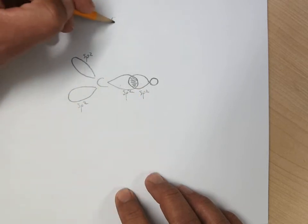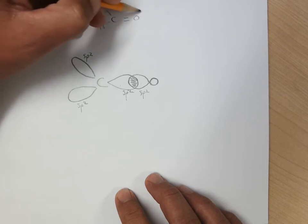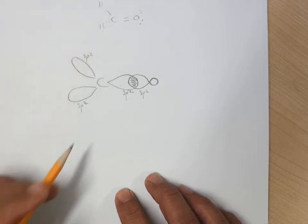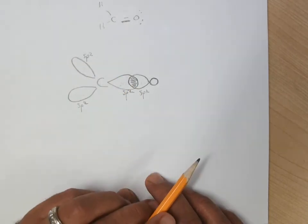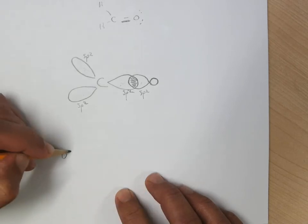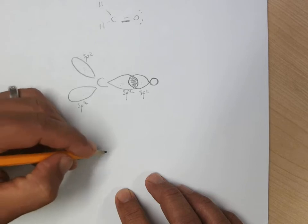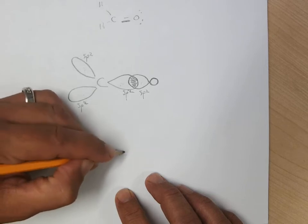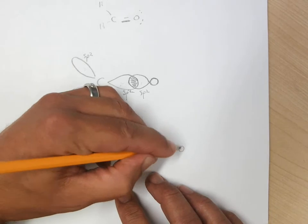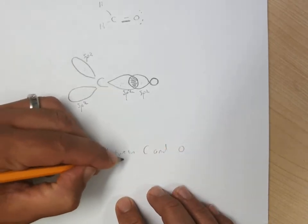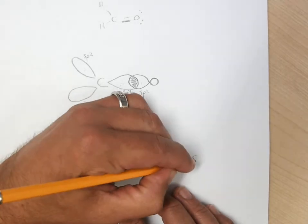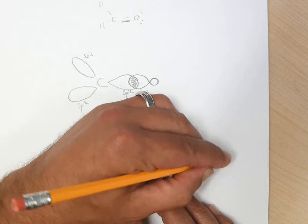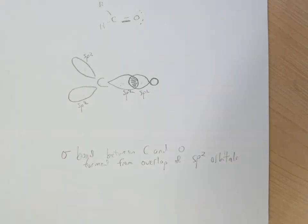So when we look at the Lewis dot structure and we see that carbon is bonded to the oxygen, we can see that this very first bond is the sigma bond between the SP2 orbitals. So that's why I might say we have a sigma bond between carbon and oxygen formed from the overlap of SP2 orbitals.